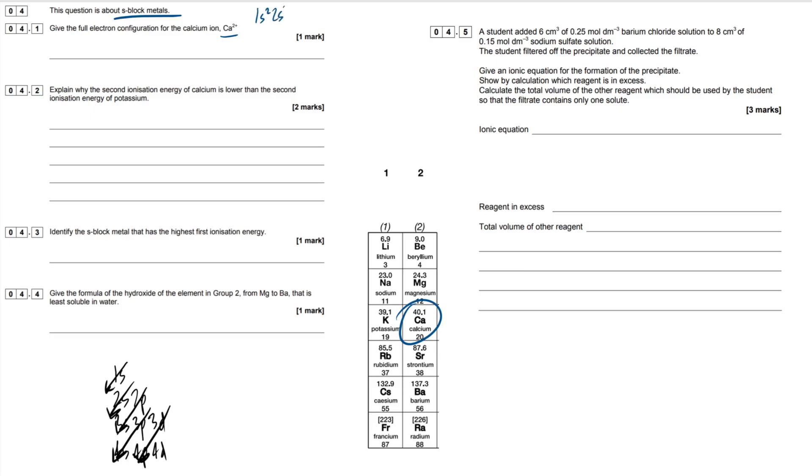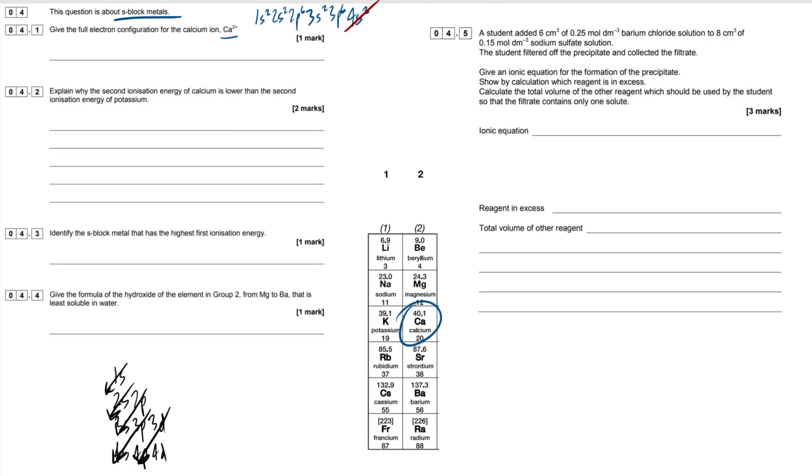So all we have to do is add these up. Let's write out our electron config for calcium atom up here. So it's going to be 20 electrons, 1S2, 2S2, 2P6. As you can see, we're following this pattern here. Next one is 3S2, 3P6, and then it's going to be 4S2. So that's our 20 electrons in total. All we have to do here is knock off two electrons.